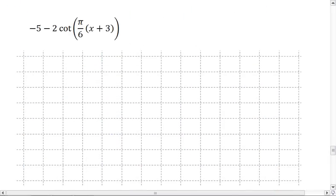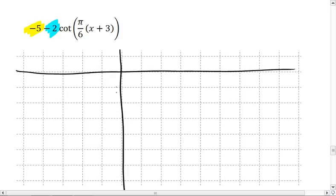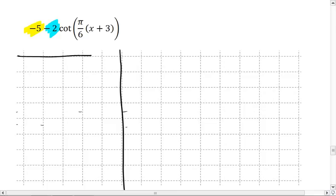Speaking of cotangent, here we go. All right, we have a vertical shift of negative 5 and an amplitude of negative 2. This will put us at negative 5. Let's do this. Perfect.